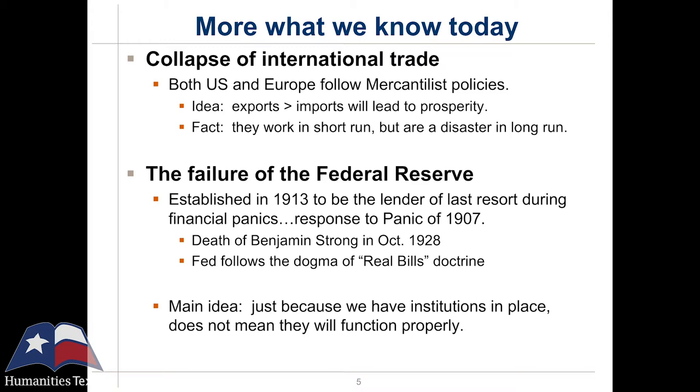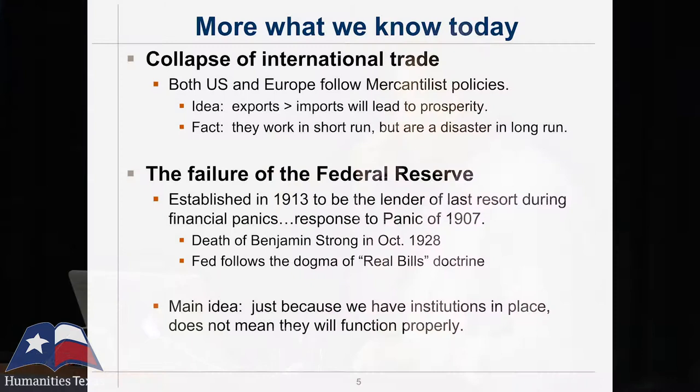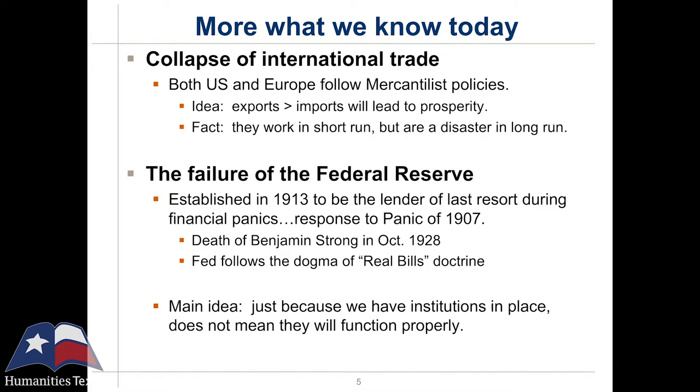Another cause of the Great Depression — an institutional structure that really failed us — was the Federal Reserve. The Federal Reserve is the central bank and monetary authority of the United States, established in 1913 and beginning operation in 1914, in reaction to the Panic of 1907, which was ended by Pierpont Morgan and his friends. We realized that allowing our financial system to be on the whim of one person wasn't a great idea, so we created the Federal Reserve in 1913. But it was a very weak structure, basically run by Benjamin Strong out of the New York Fed.